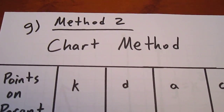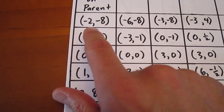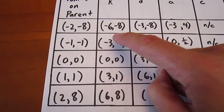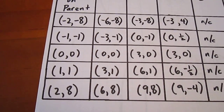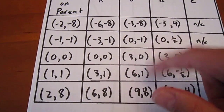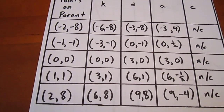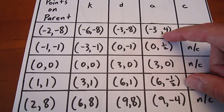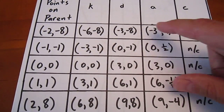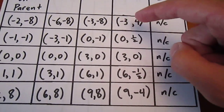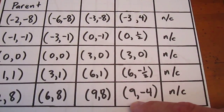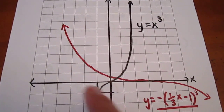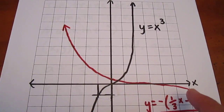Now we look at the chart method. The points on the parent curve are negative two negative eight, negative one negative one, zero zero, one one, and two eight. With a k value of one-third, we multiply each x-coordinate by one-third, leaving y-coordinates the same. With a d value of three, we add three to each x-coordinate, leaving y-values the same. With an a value of negative one-half, we multiply each y-coordinate by negative one-half, leaving x-coordinates unchanged. A c value of zero leads to no change. We graph these points and draw a curve maintaining the integrity of the original curve.